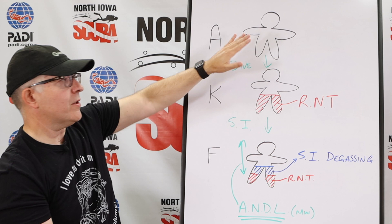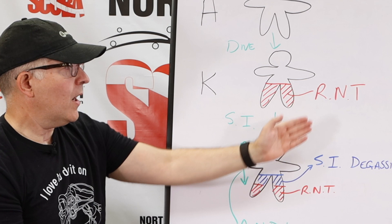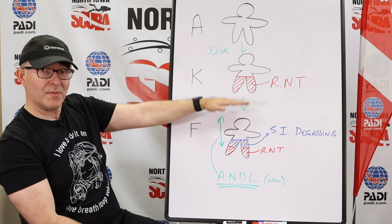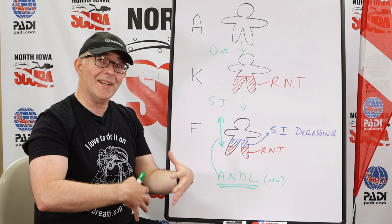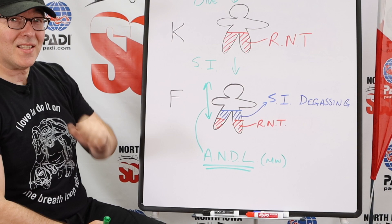Then we go for a dive. We become a K diver at the end of that dive — we have loaded some of that nitrogen into our tissues and we call that residual nitrogen time. We're going to take a surface interval, some time out of the water, and during that surface interval we are going to degas. We're going to give off some of that nitrogen, so our residual nitrogen time decreases. Degassing is represented by the blue, and then some residual nitrogen time, which is less than a K diver — that's why we become an F diver.